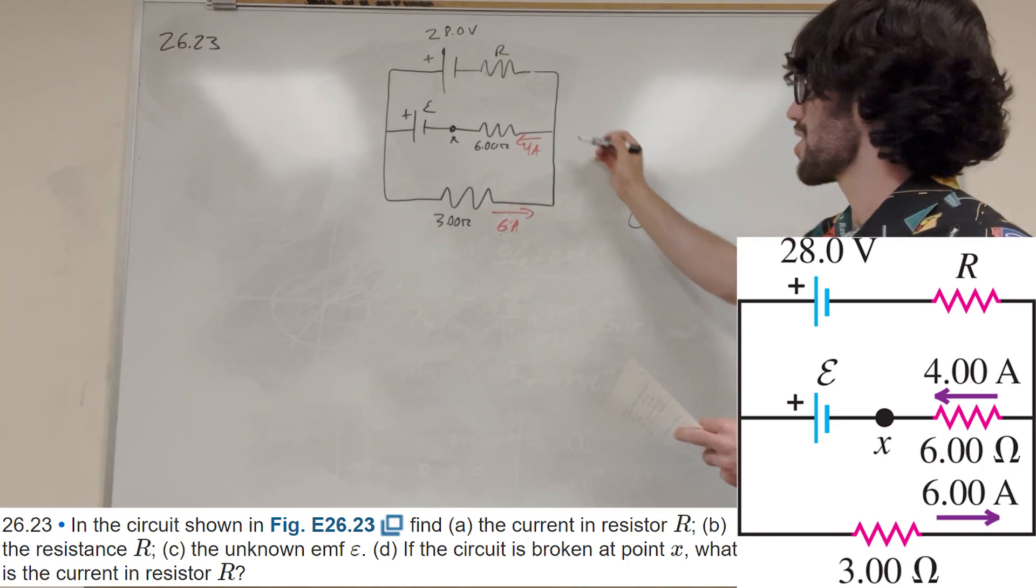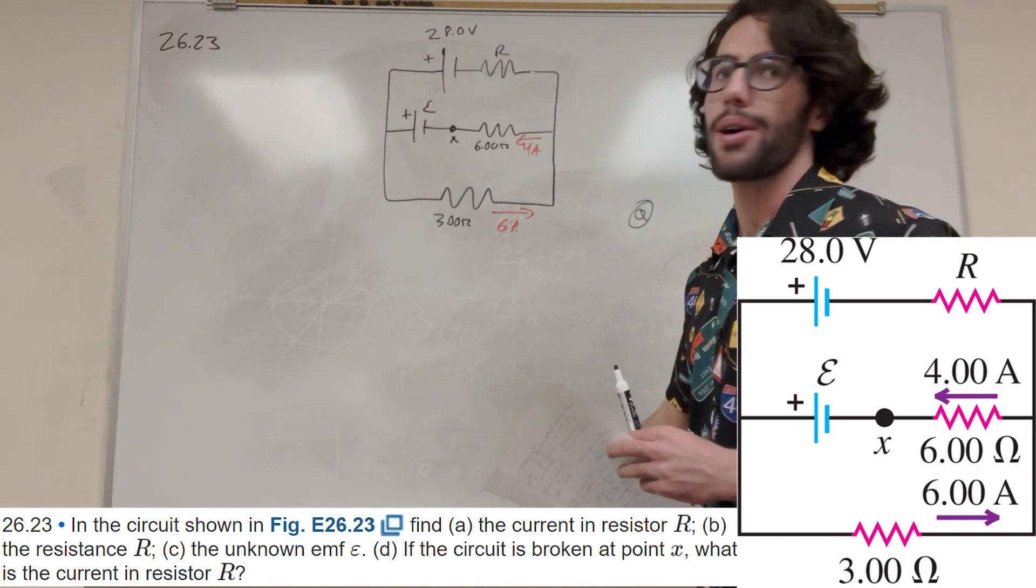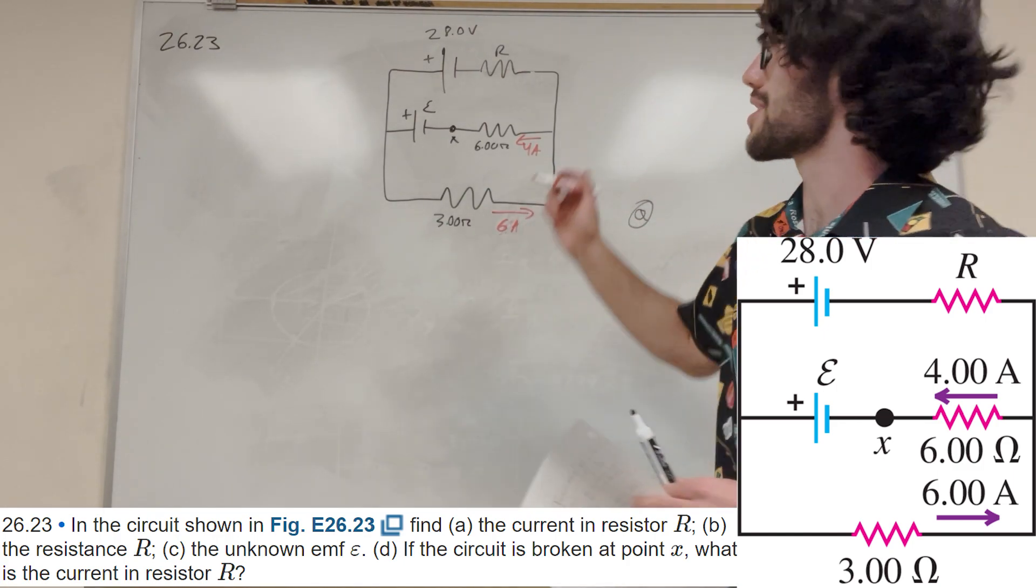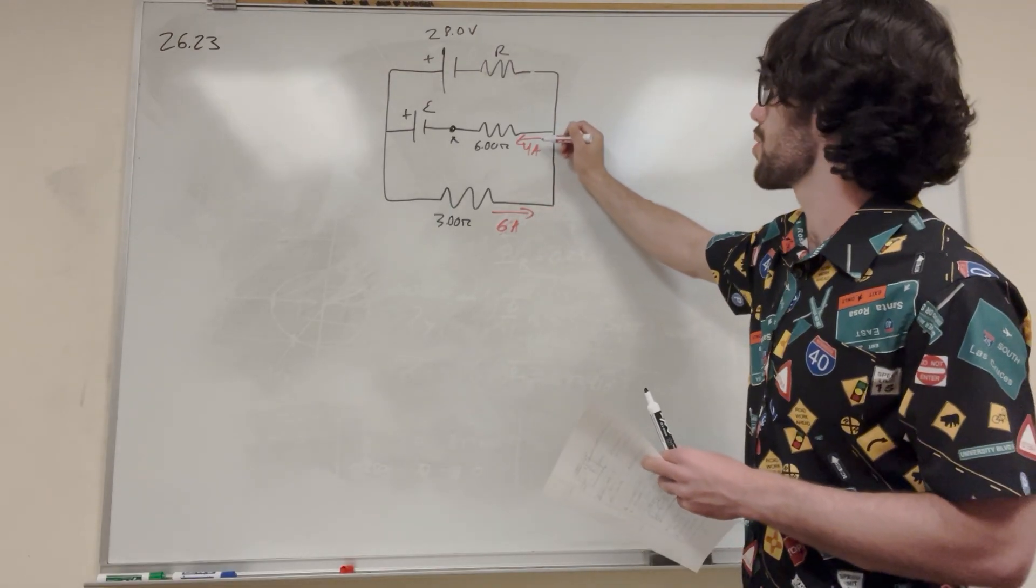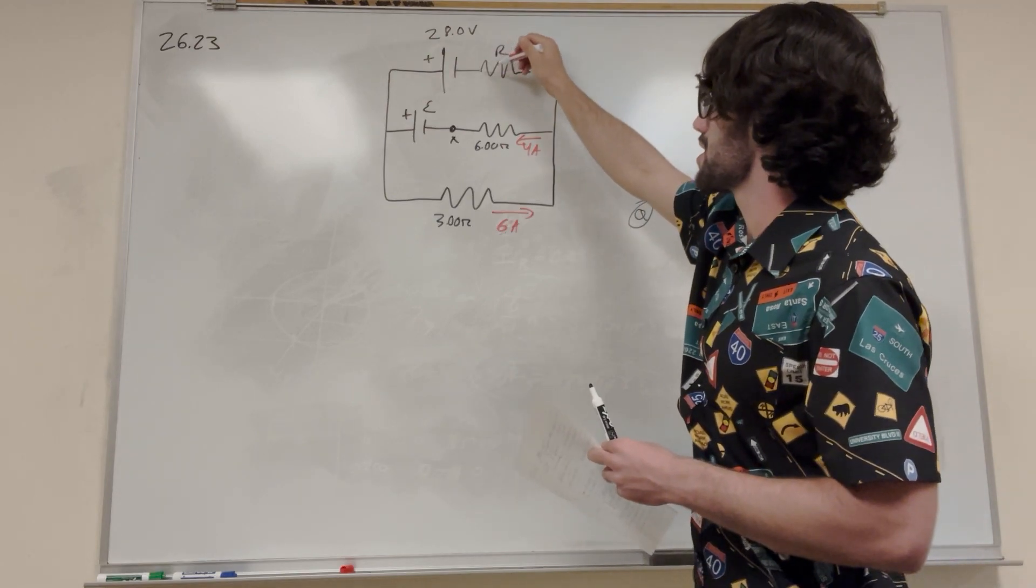Part A wants us to find the current here. So we're looking for the current in this part, the current in resistor R. So we know that there's a current of 6 amps here, and it splits off here, it goes 4 amps, and then there's going to be some current in this.